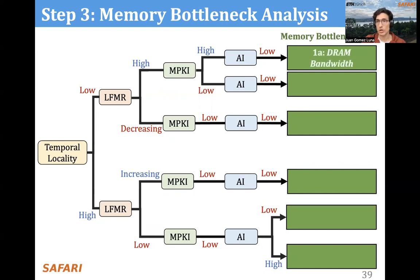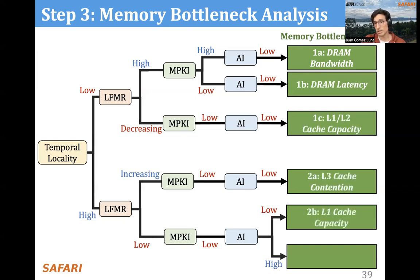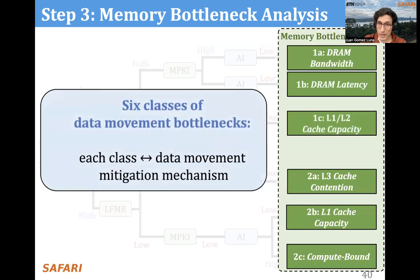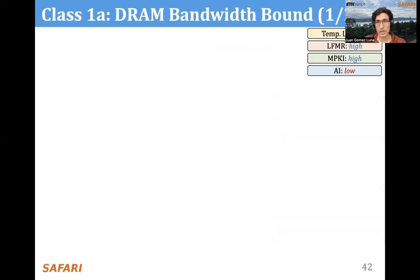The six classes of memory bottlenecks are: DRAM bandwidth bound, DRAM latency bound, L1/L2 cache capacity bound, L3 cache contention bound, L1 cache capacity bound for applications with high LFMR that really benefit from L2 and L3 caches, and finally compute bound workloads. For each class, we also identify and correlate the most suitable data movement mitigation mechanism.